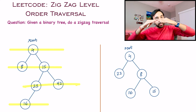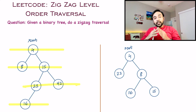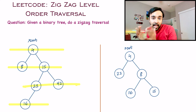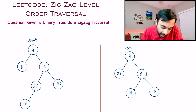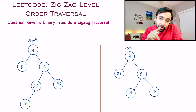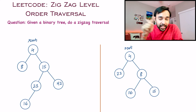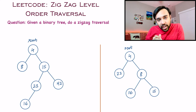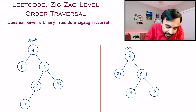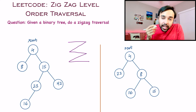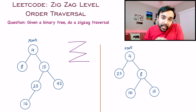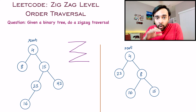That means you are going level by level — that is the level order traversal. But in this problem statement you have to traverse this tree in a zigzag fashion. A zigzag pattern looks something like this, so how do you implement this pattern while traversing a tree?